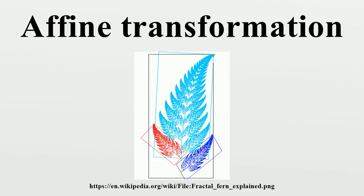If an origin is chosen, and its image is denoted, then this means that, for any vector, if an origin is also chosen, this can be decomposed as an affine transformation followed by the translation by a vector. The conclusion is that, intuitively, an affine map consists of a translation and a linear map.